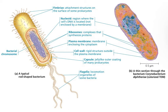In prokaryotes, we usually have a cell wall, but not all eukaryotes have a cell wall — more on that later. Prokaryotes can also have a variety of other layers on the outside, like a capsule or a slime layer, but you don't usually study those too much unless you're taking a microbiology class.